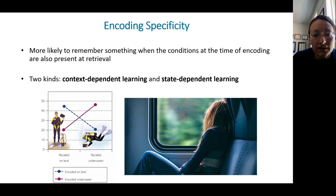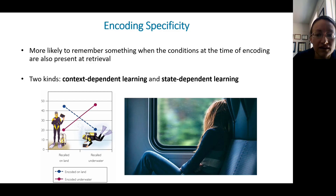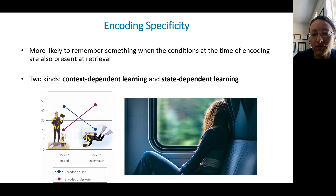We are more likely to remember information when the environmental context at the time of encoding is also present at retrieval. There are two kinds: context-dependent learning and state-dependent learning. Context-dependent learning describes superior retrieval when the encoding context matches the retrieval context. There's a study on divers where they asked divers to learn something either underwater or on land, then tested their recall underwater or on land — and they were more likely to remember what they learned underwater when tested underwater.